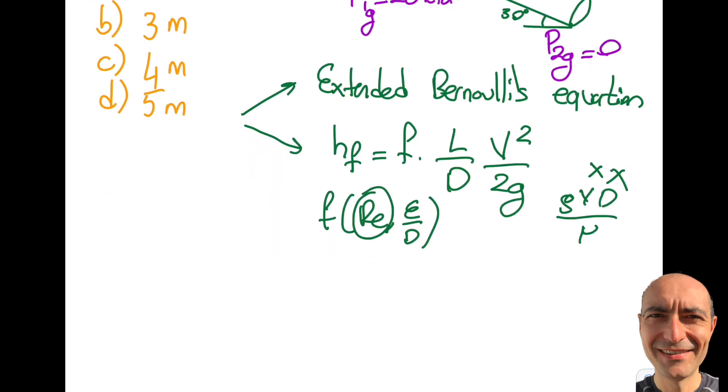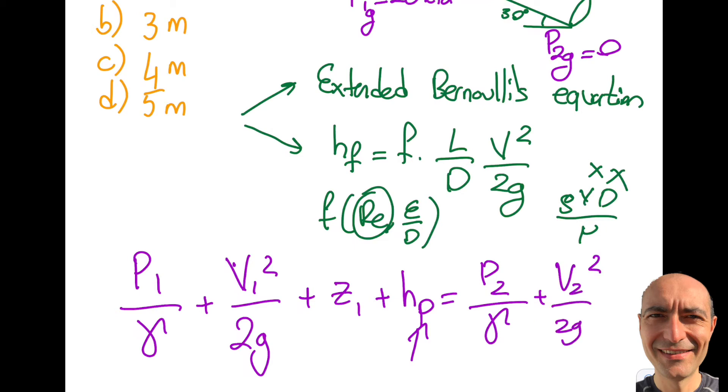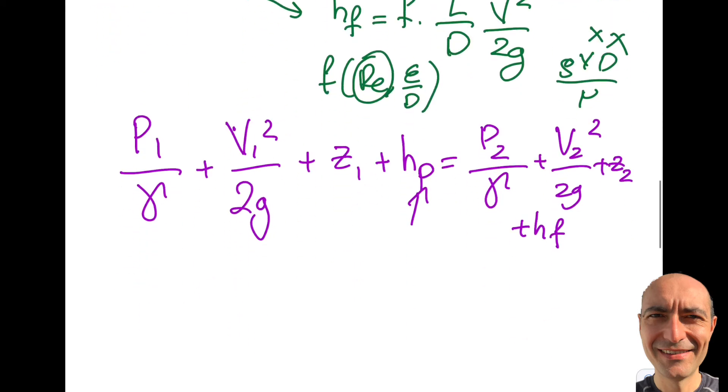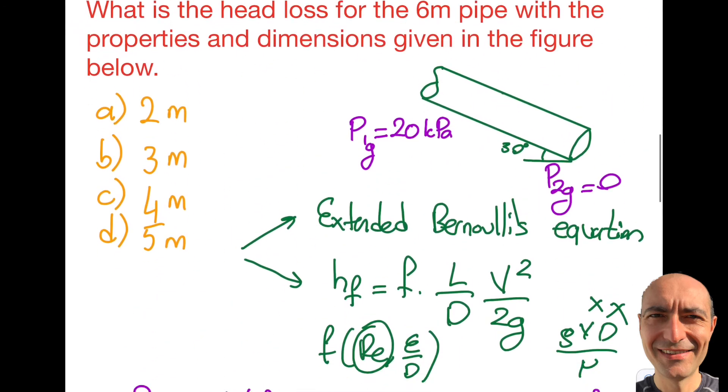So after obtaining this, actually the rest is not that difficult. So we are just going to use the extended Bernoulli's equation. Let's go like this. p1 over specific weight plus v1 square over 2g plus z1. And there's an hp over here. The manual doesn't say this is the input power, but zero in this particular case. It's simply a pipe. v2 square over 2g plus z2 plus hf. And the question is asking you on this. So let's go back over here.